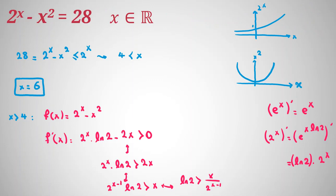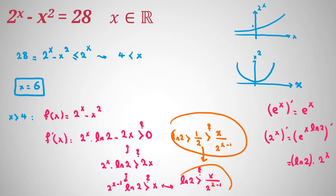So we want to prove f prime is positive. All the steps are equivalent. If we prove that one-half is greater than x over 2 to the x minus 1 for x greater than 4, then combined with ln 2 greater than one-half, we can prove the result. This part is not a direct equivalence, but from it we can prove what we wanted.